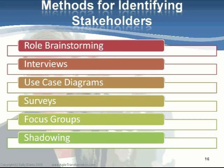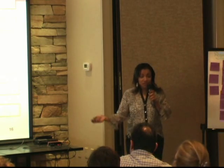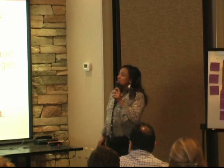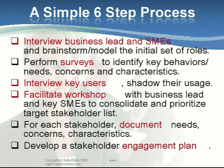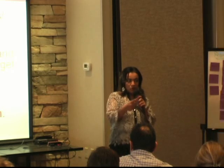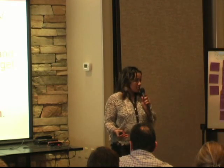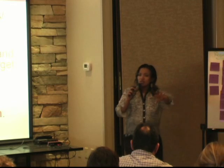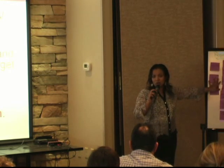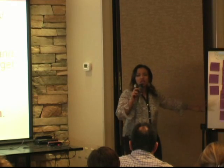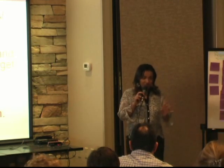Today I'm going to talk to you about role brainstorming, interviews, and use case diagrams. Obviously you can also do surveys, focus groups, and shadowing — all these techniques for identifying who are the right people. You do not have to use all of them. I'll show you which ones you can use. If you had to go through a six-step process, it would look something like this. First, you would find the business lead and say, 'Can I just have a brainstorming session with you and some of the subject matter experts?' So your business lead tells you there are two other managers and maybe one user to talk to — can we just spend 30 minutes on a brainstorming session to identify who the right people are that we should be considering in this project?